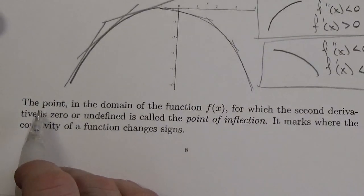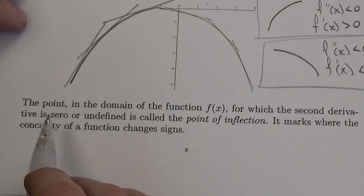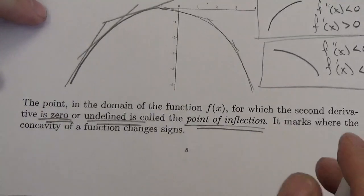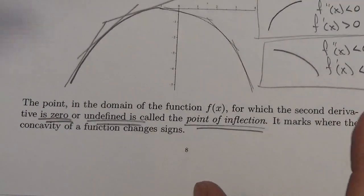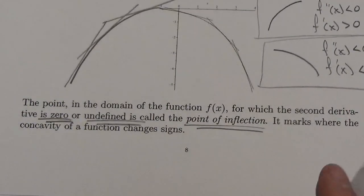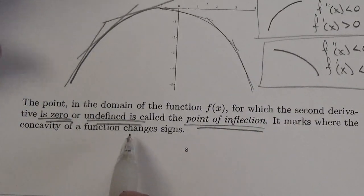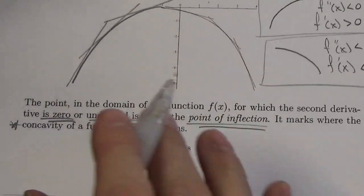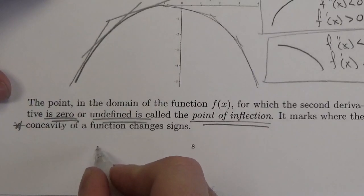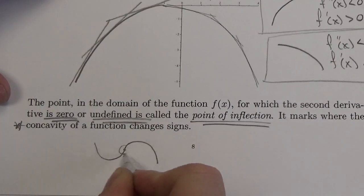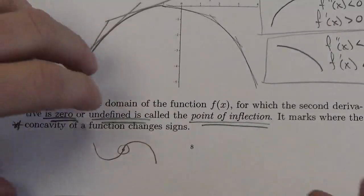The point in the domain of the function for which the second derivative is zero or undefined is called a point of inflection — but there's more to this definition. It marks where the concavity of a function changes signs, and that is really important. To be a point of inflection, there must be a change in concavity. There's concave up, there's concave down, there's the point of inflection — the concavity must change there.